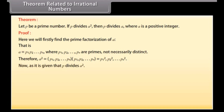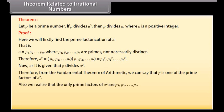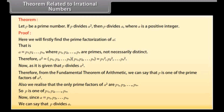Now, since p divides a², from the Fundamental Theorem of Arithmetic we can say that p is one of the prime factors p₁, p₂, ..., pₙ of a². So p is one of p₁, p₂, ..., pₙ. Since a = p₁ · p₂ · ... · pₙ, we can say that p divides a.